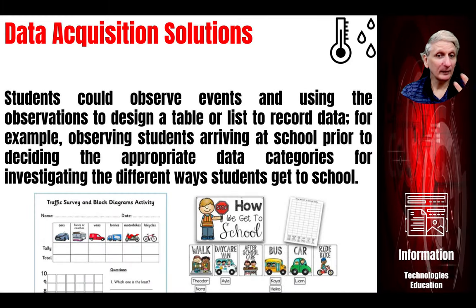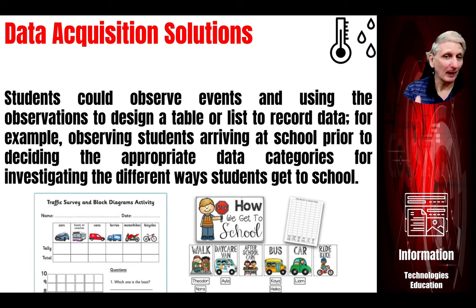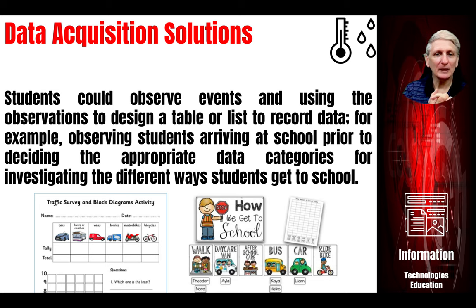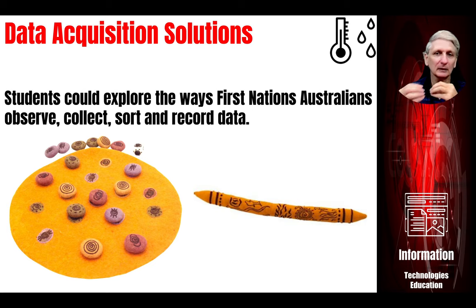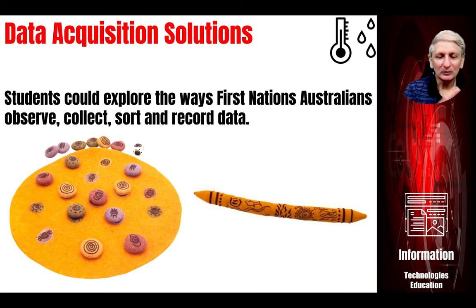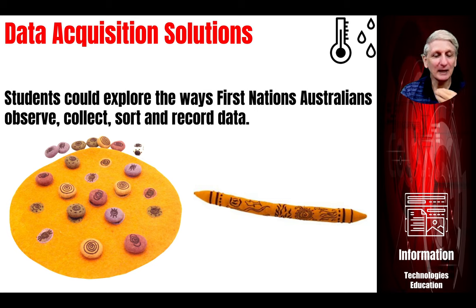Students could also go out and observe things such as the different vehicles passing into the school car park, doing a survey of their classmates on how they get to school, and looking at ways they can categorize and interpret that data. They can also look at other sorts of data, such as the sorts collected by First Nations Australians, and how they use message sticks, paintings, songs and other — more traditional — different ways of engaging with data than our Western tradition of data collection.